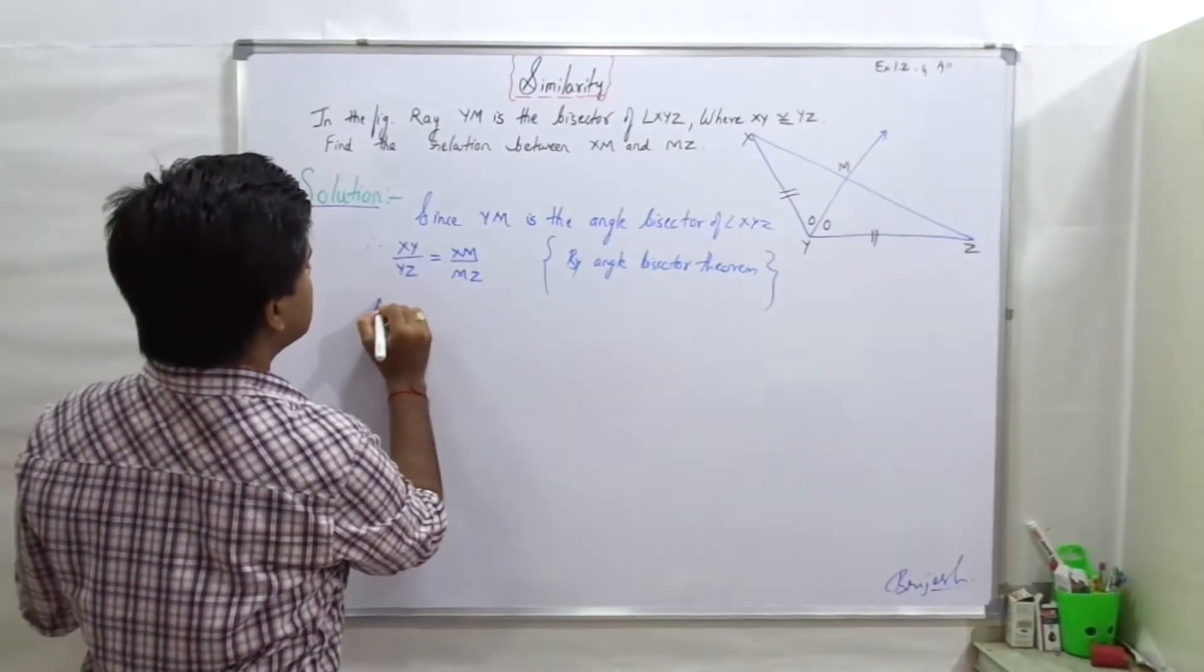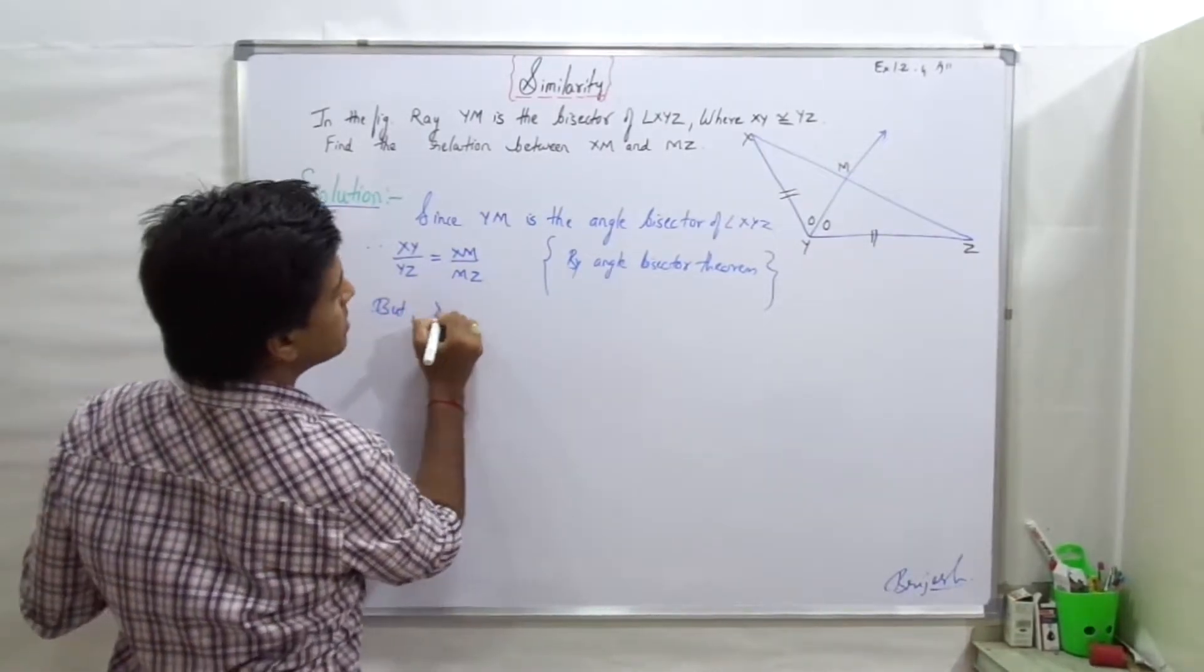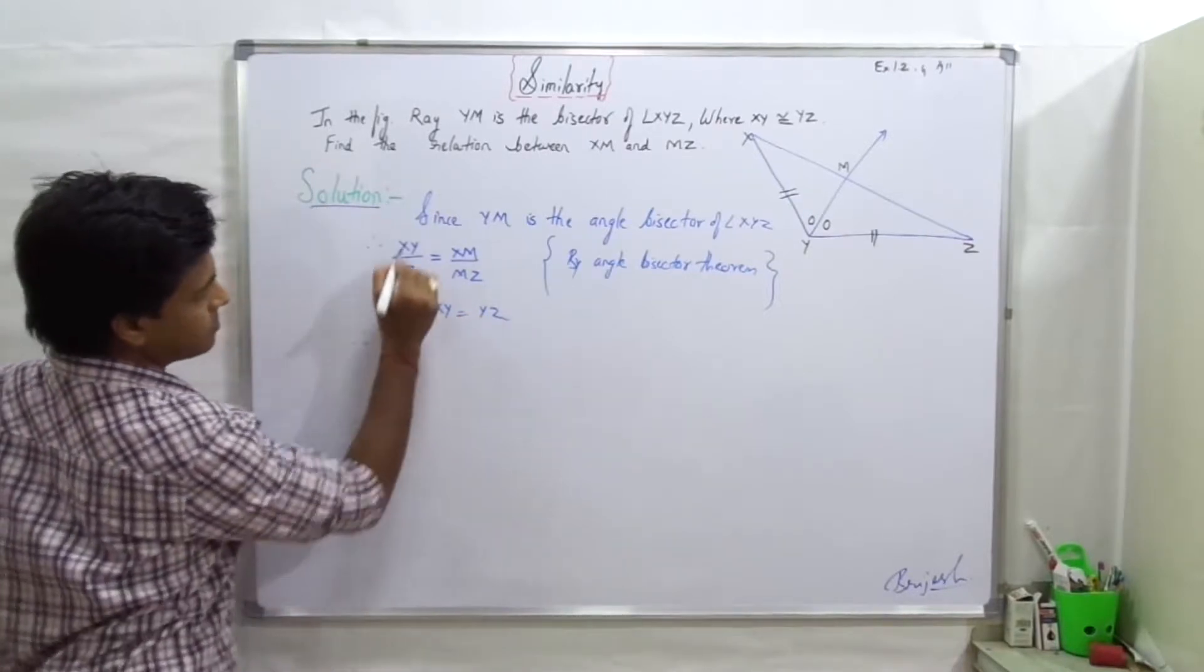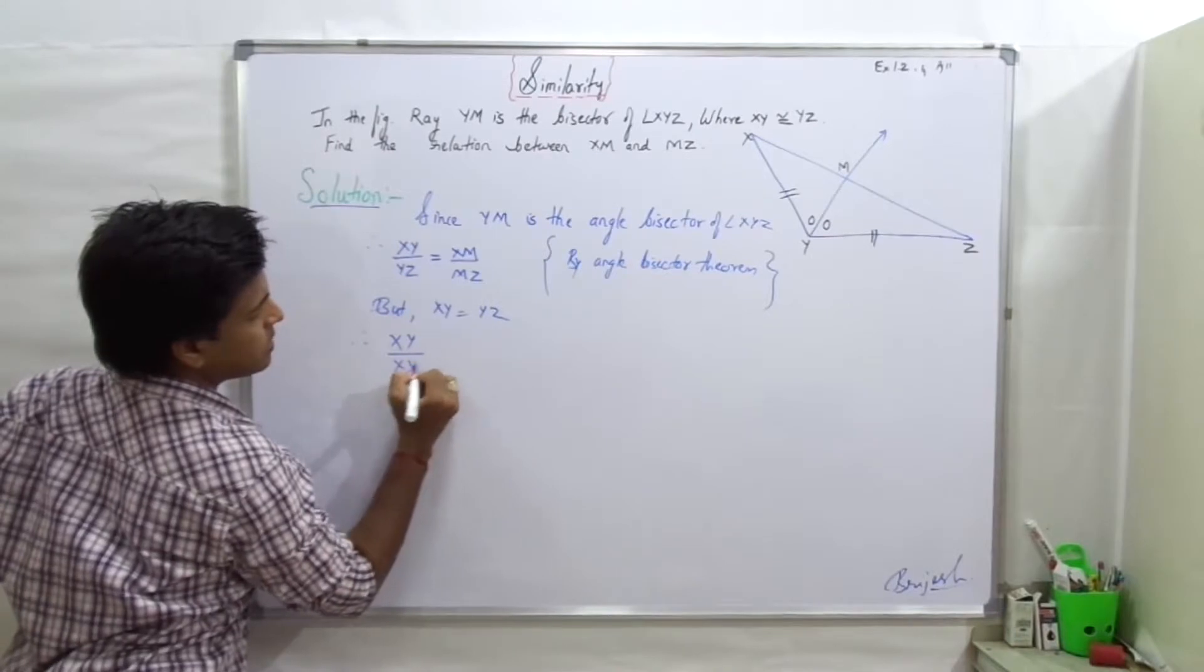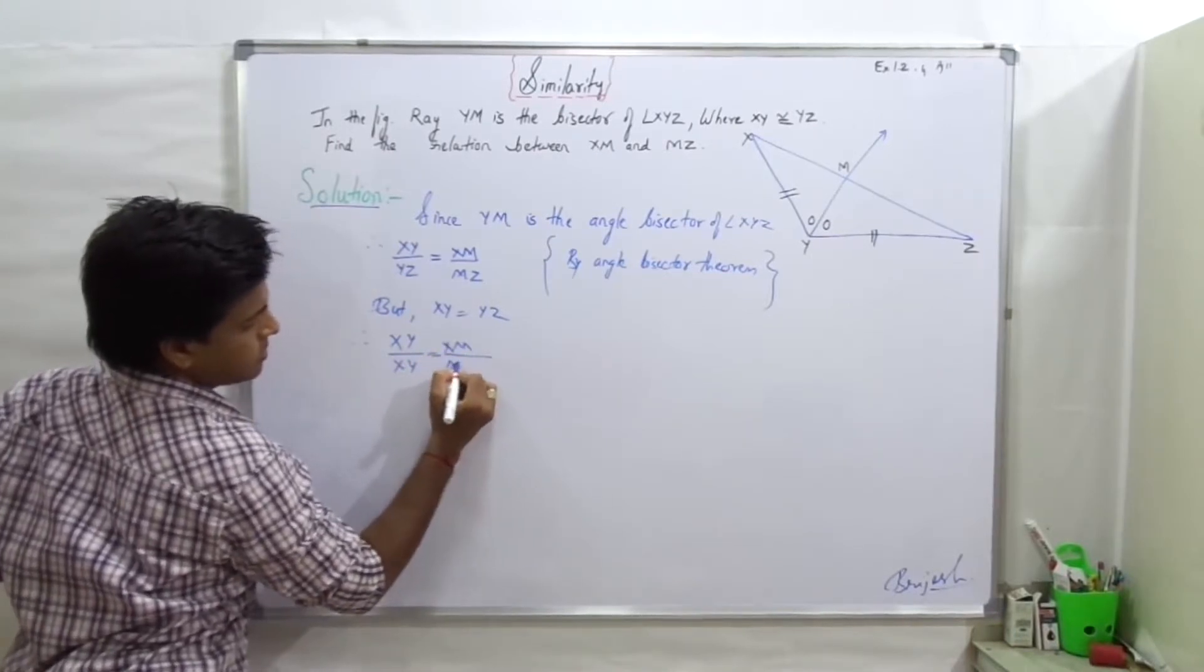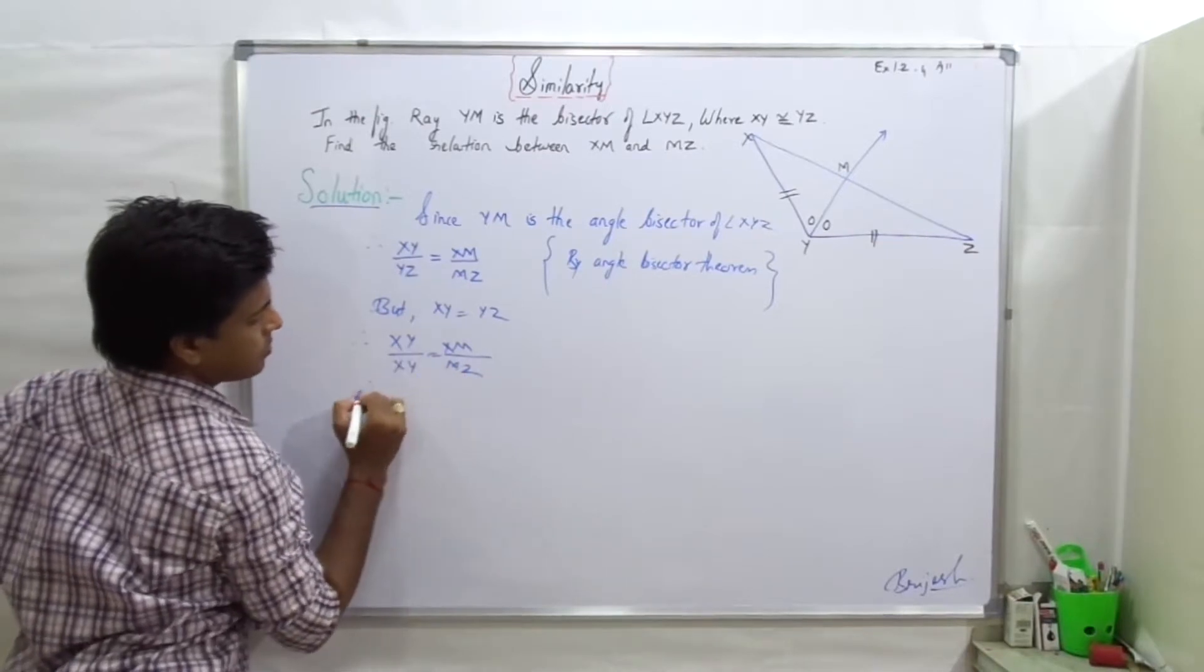But XY equals YZ, therefore XY upon XY equals XM upon MZ. This cancels to one.